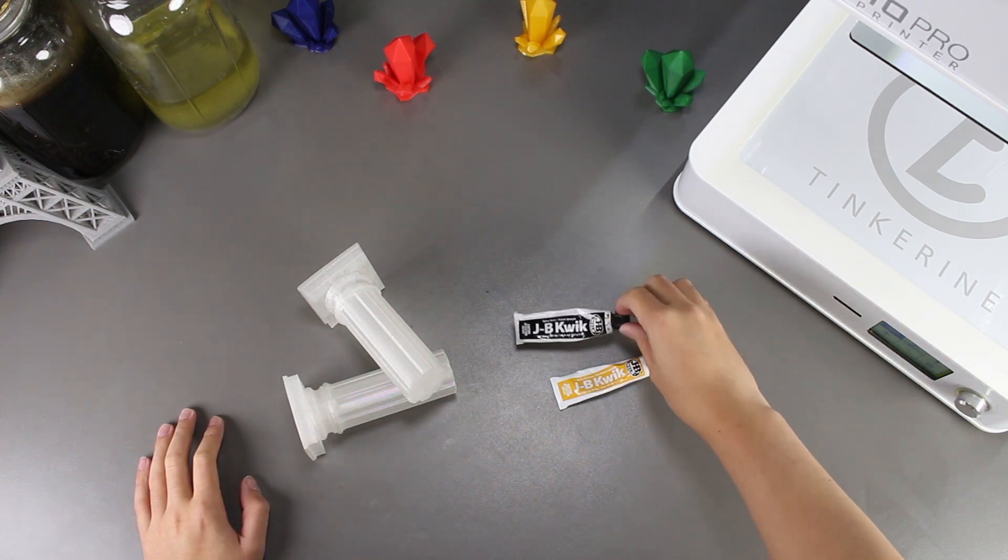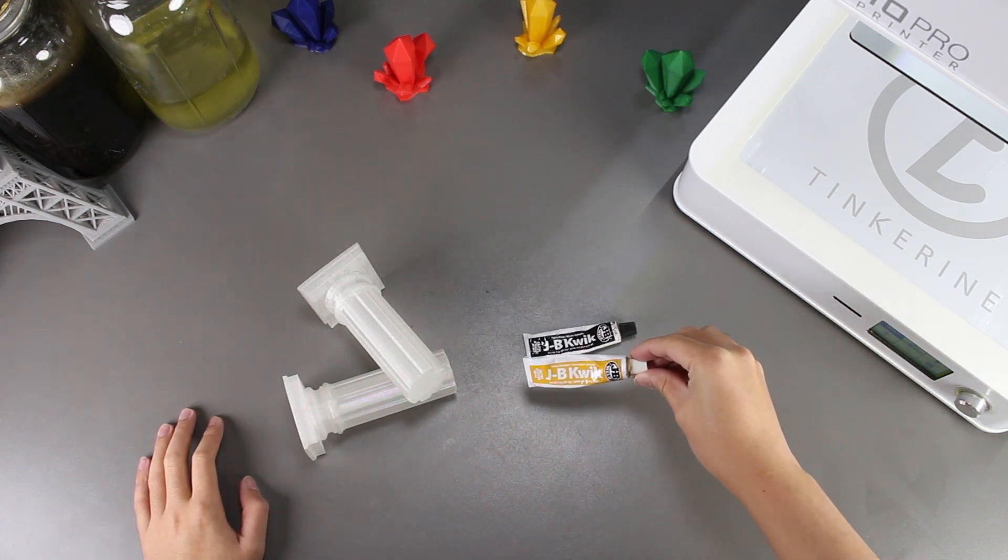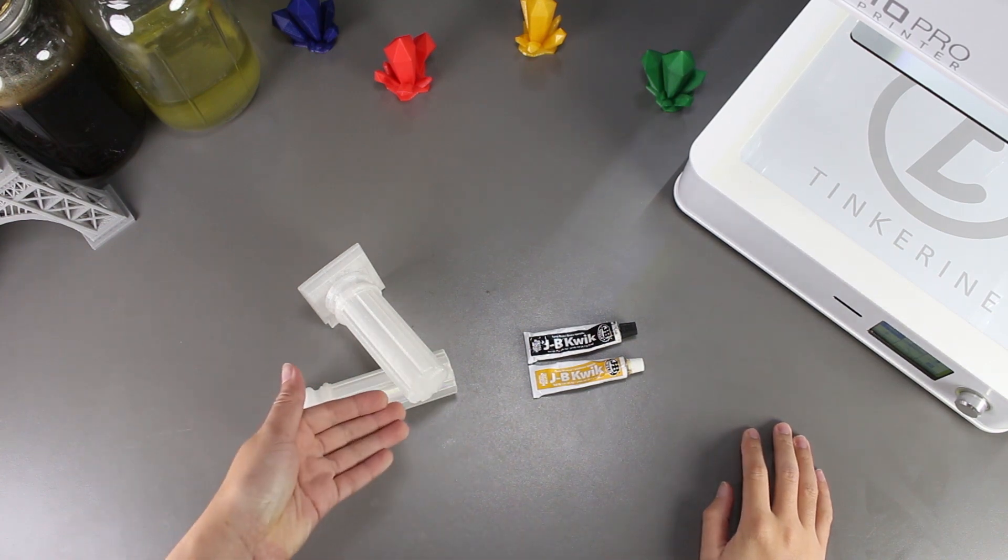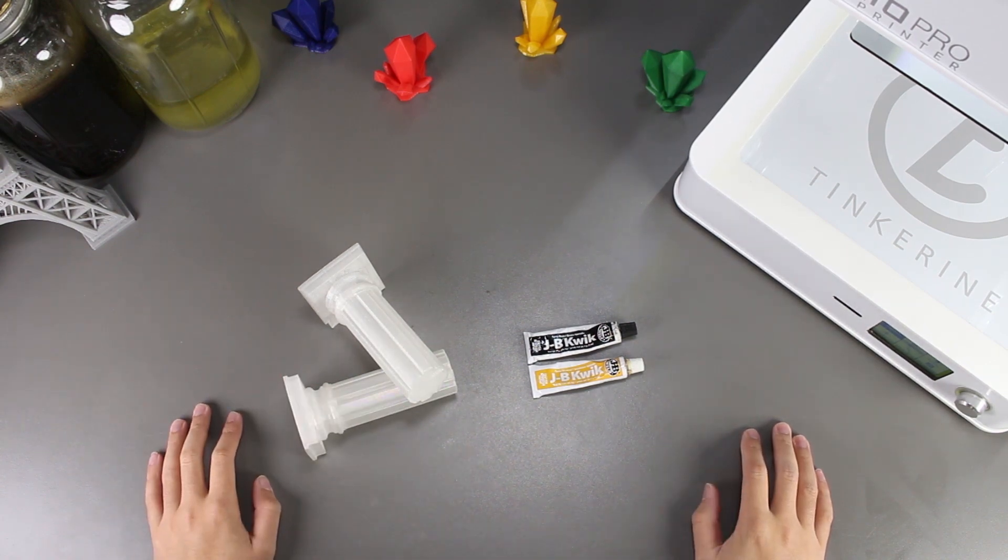Welcome to another episode of Tinkering Experiments. In this episode, we will be using JB Quick epoxy to glue the two 3D printed PLA parts together.